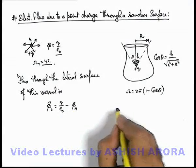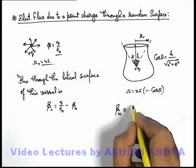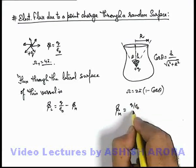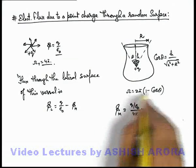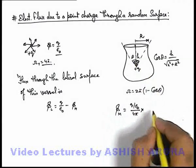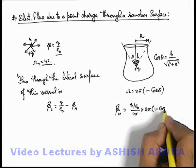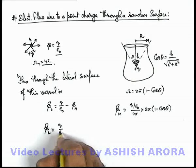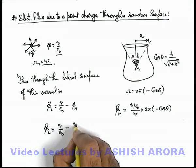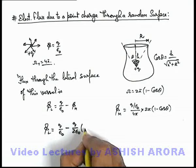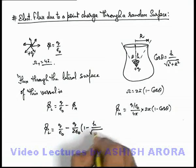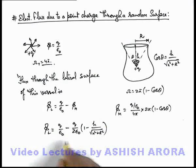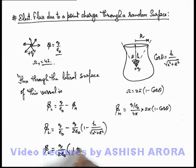Now in this situation, the flux through the mouth can be written as: total flux q by epsilon-not, which is distributed in a solid angle of 4π, multiplied by the solid angle of this conical zone which is 2π(1 − cos θ). So if we substitute it, flux through the lateral surface can be written as q by epsilon-not minus q by 2·epsilon-not · (1 − cos θ), where cos θ is h by √(h² + r²). On simplifying, we get the flux through the lateral surface = q by 2·epsilon-not · (1 + h/√(h² + r²)).